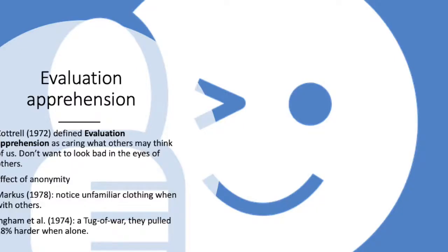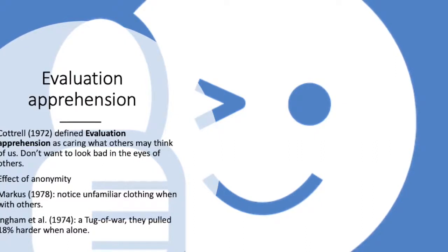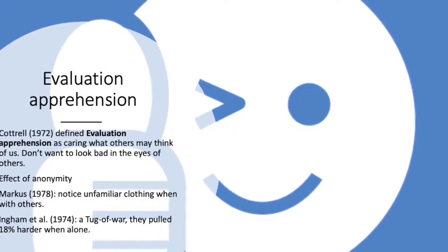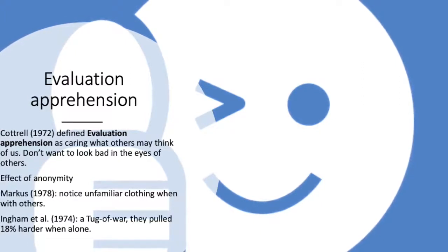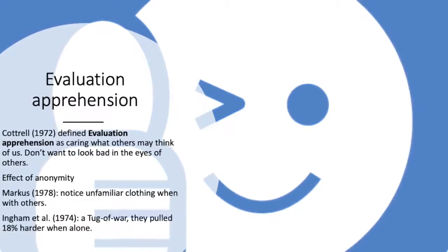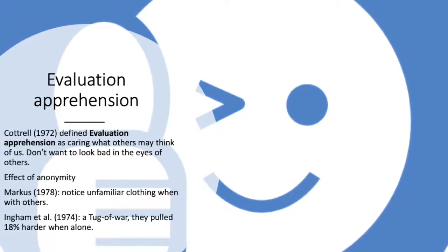Additionally, Cottrell in 1972 proposed evaluation apprehension, which is defined as caring what others may think of us. We generally do not want to look bad in the eyes of others. Strikingly, when we are anonymous, we don't care so much for evaluation apprehension and hence reduce our performance ability. This is known as loafing.